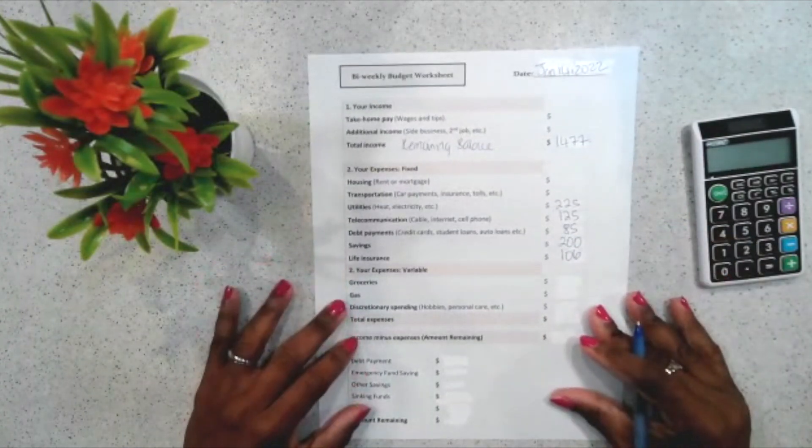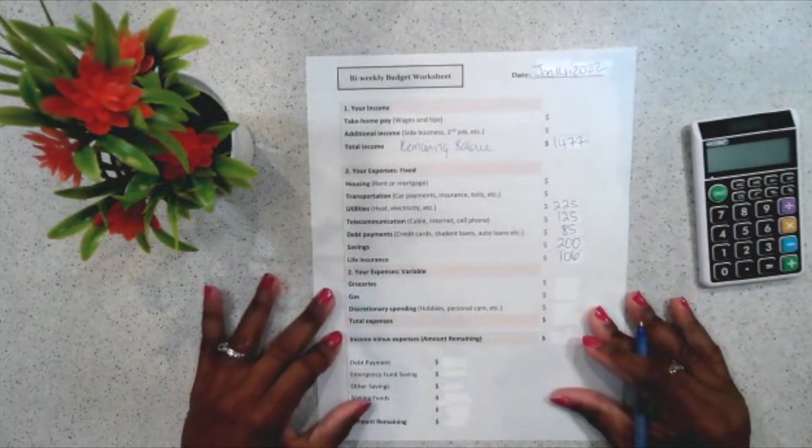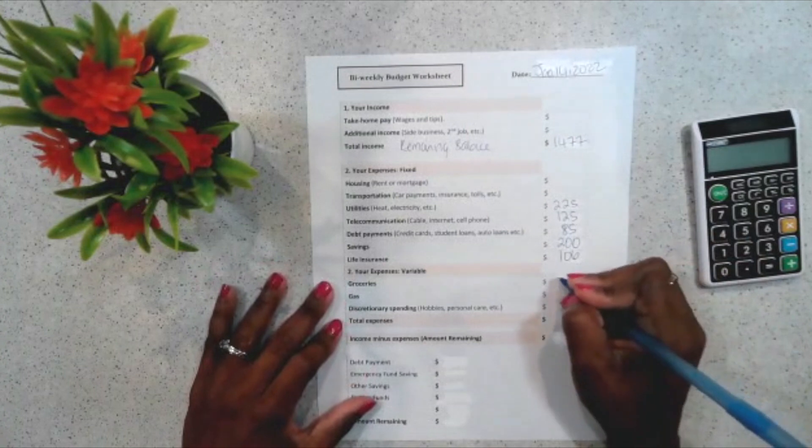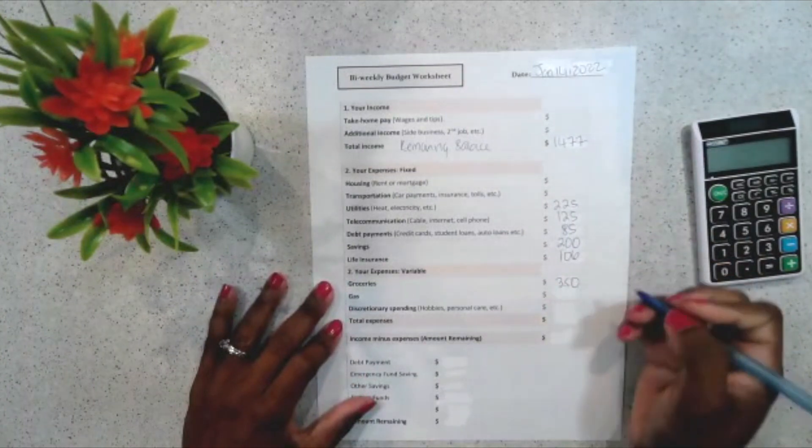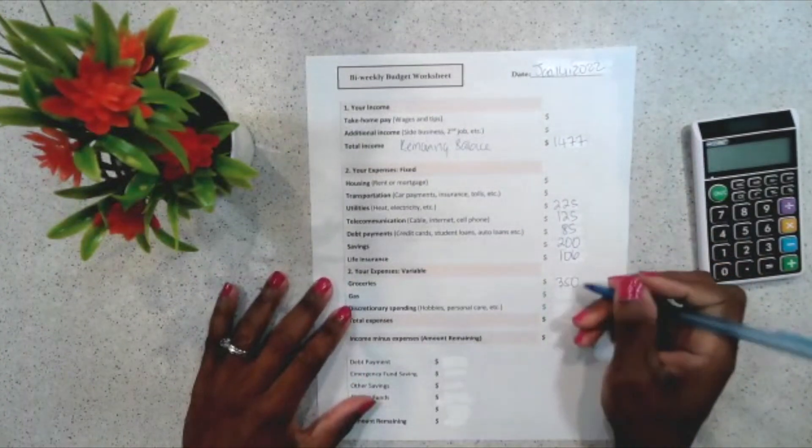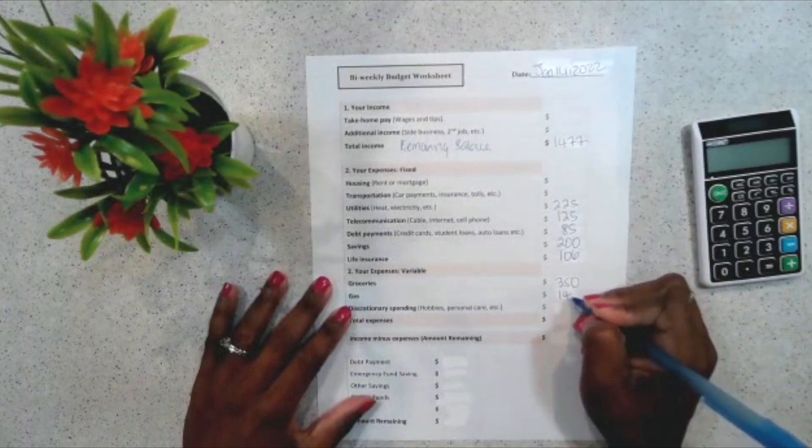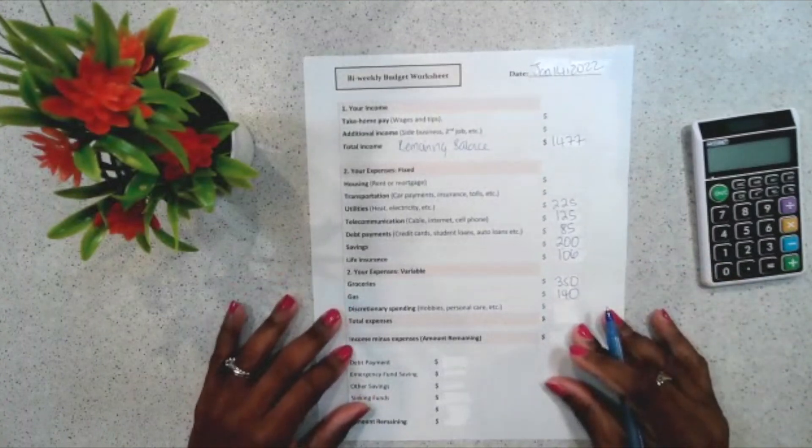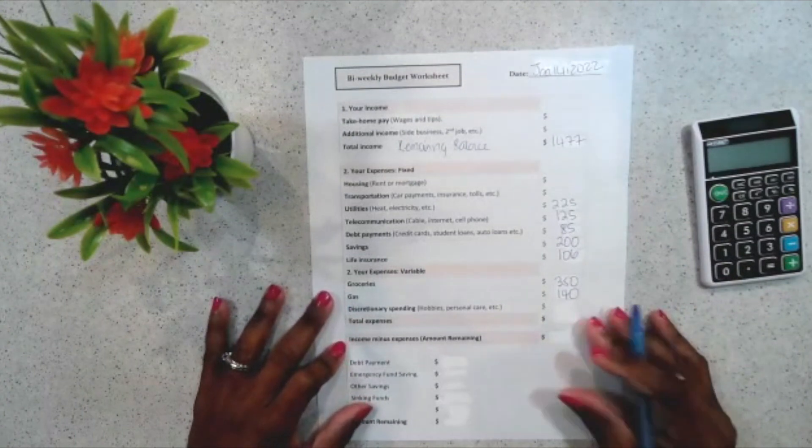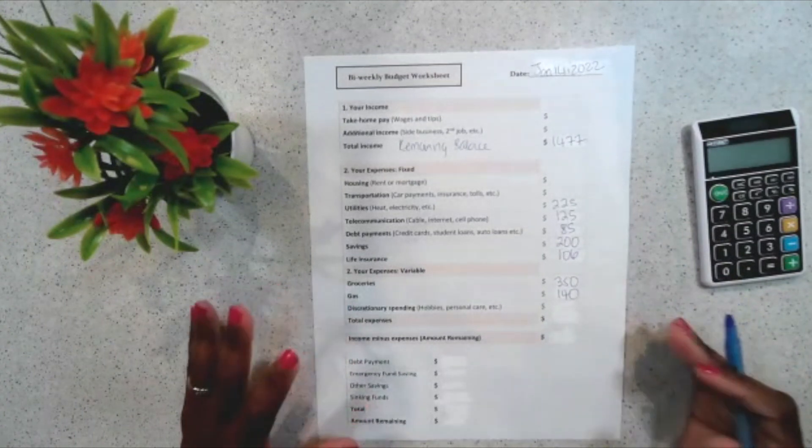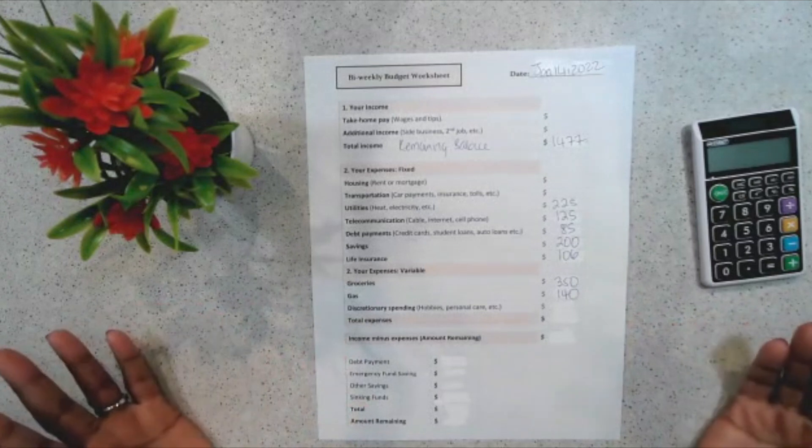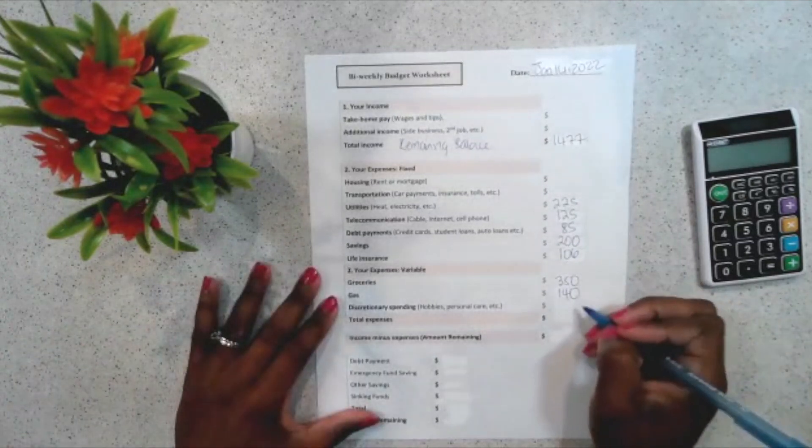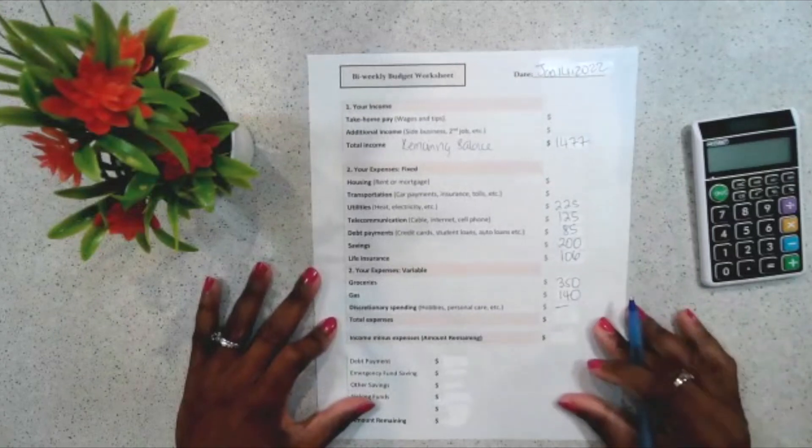So, I'm going to now enter the amounts for my variable expenses. So, for my groceries, that's $350. And then, the gas for our vehicle, that's $140. There's a category called discretionary spending. And this is like personal care. So, whatever the amount you feel is okay for your spending, then you can enter that amount. But, for me, I'll leave that blank.